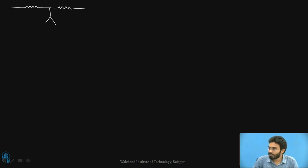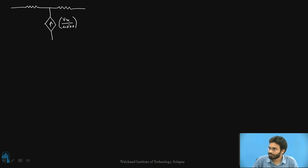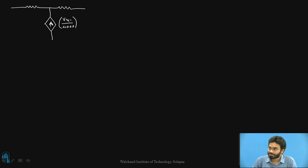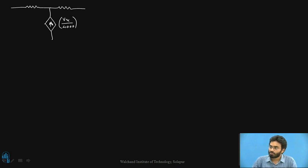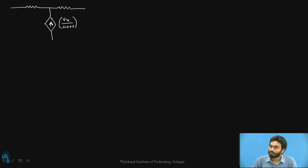As you can see, we have a dependent source and this dependent source is a current source having a value of Vx/4000. This is a current source whose unit is 1/4000, which is dependent on Vx. Since we're having an arrow inside a diamond, that's a clear indication that this is a dependent current source - more specifically, a voltage-dependent current source.